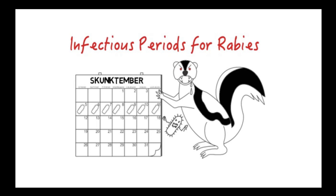The incubation period can be both prolonged and variable. Virus often remains at the inoculation site for a considerable time, explaining the efficacy of post-exposure prophylaxis by local infiltration of rabies immune globulin. Most rabies cases in dogs develop within three to twelve weeks, but in one reported human case of rabies the incubation time exceeded eight years.